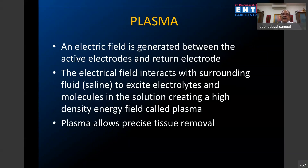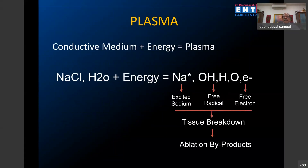An electric field is generated between the active electrode and the return electrode. When the electric field is present, it causes radio frequency waves. These radio frequency waves in the presence of saline excite the electrolytes — the sodium and chloride — causing plasma energy which starts ablating. In simple terms: the conductive medium is saline, energy is radio frequency, it creates plasma, and this plasma excites sodium free radicals and electrons, causing tissue breakdown — what we call ablation byproducts.